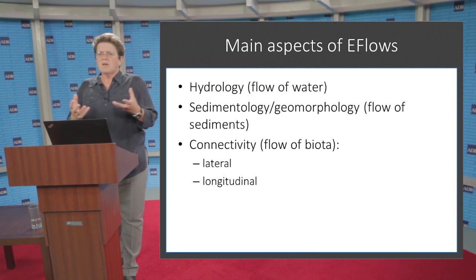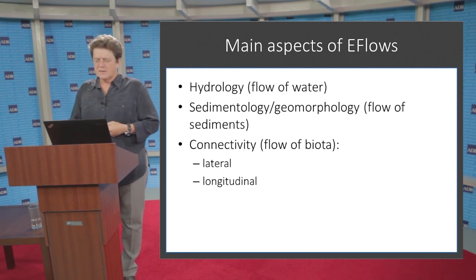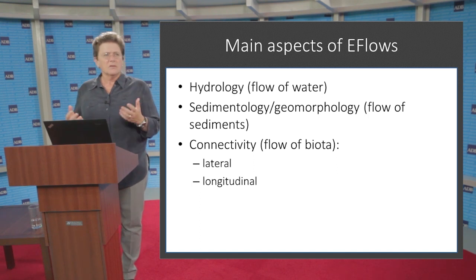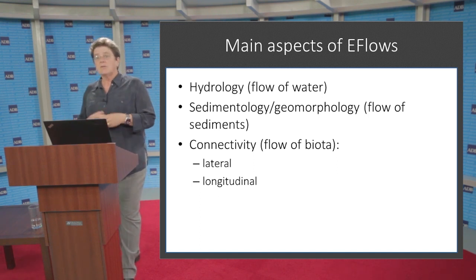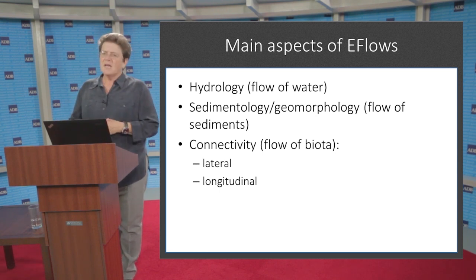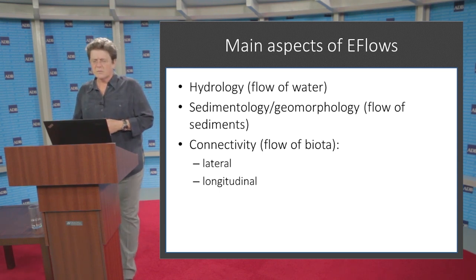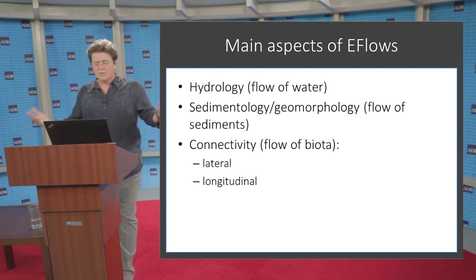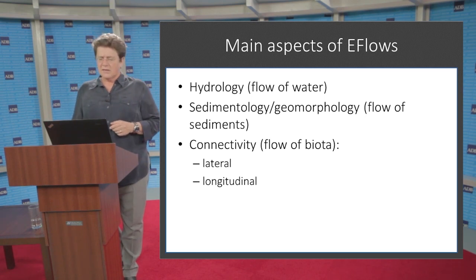In line with this interconnectivity, the main aspects of environmental flows are: hydrology — the flow of water; sediments and geomorphology — the flow of sediments, where they land, where they erode, how they create habitats in the river ecosystem; and connectivity — the flow of biota both up and down the river system but also laterally into floodplains and lakes. I'd like to go through each one of these aspects in a little more detail.